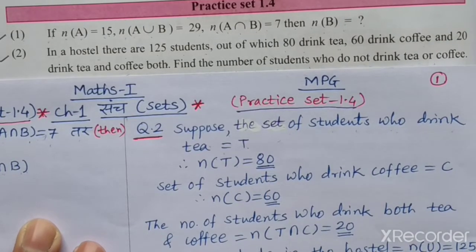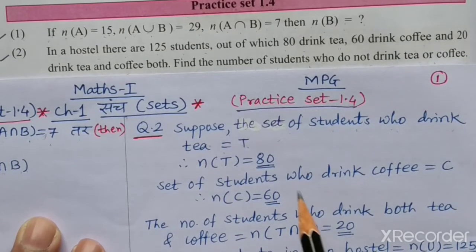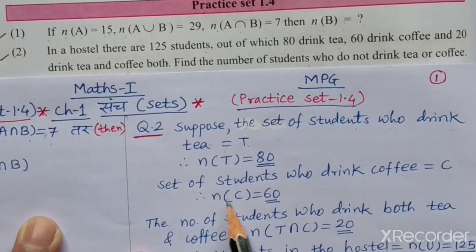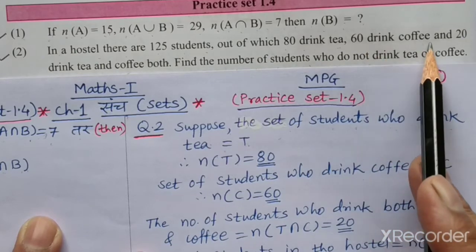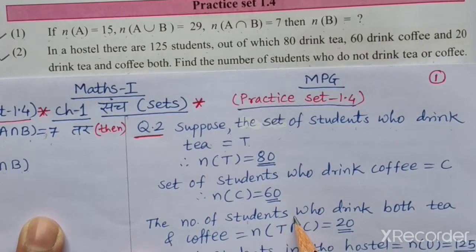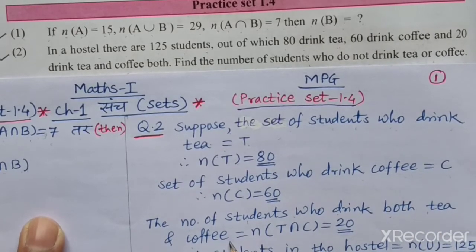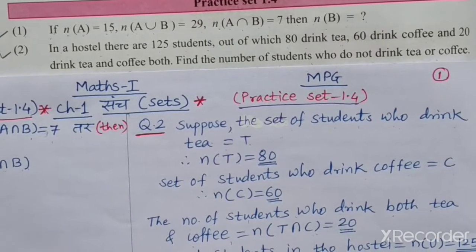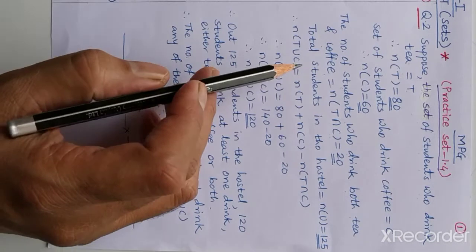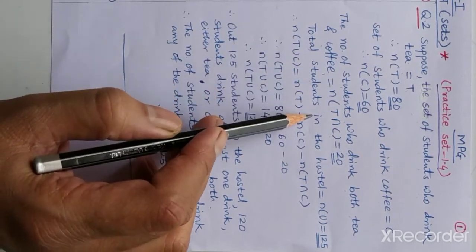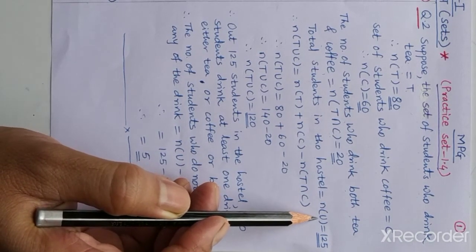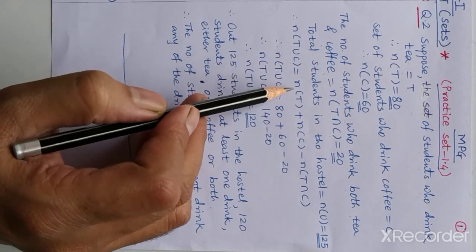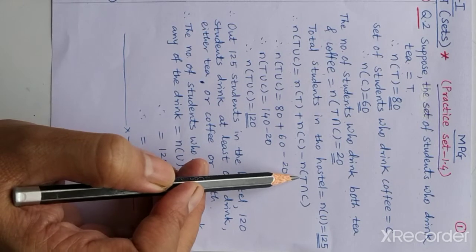Similarly, the set of students who drink coffee is C, and n(C) = 60 because 60 students drink coffee. The number of students who drink both tea and coffee, n(T∩C), is equal to 20. Total students in the hostel, n(U), is equal to 125.